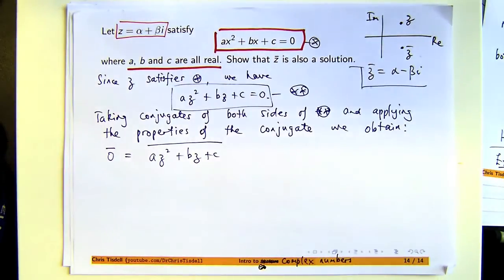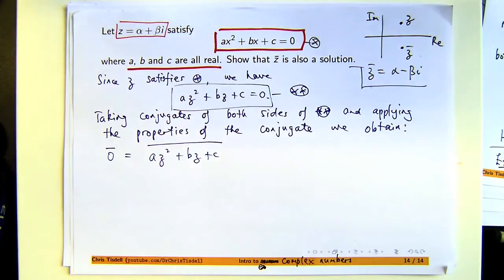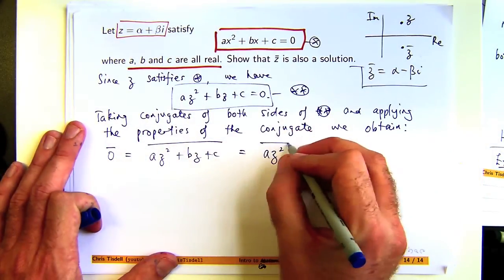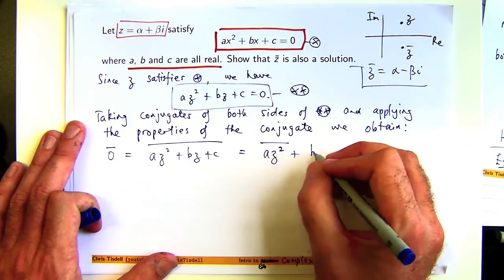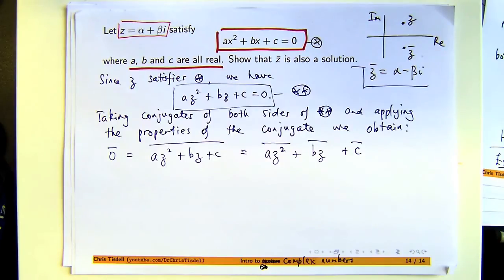I'm taking the conjugate of the whole thing. We know this is going to be zero, and here we've got some sort of, we want to break that down. The conjugate of a sum is the sum of the conjugates. The conjugate of a sum of complex numbers is the sum of the conjugates. That's all it is.